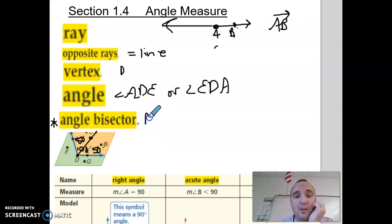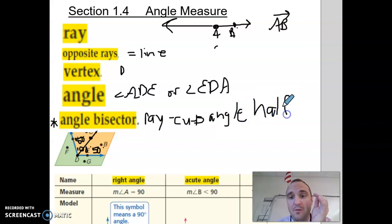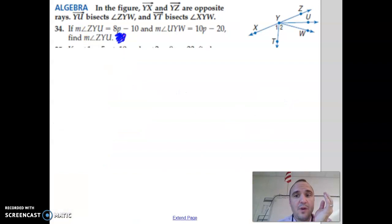So an angle bisector is usually a ray, and it cuts an angle in half, always. If I say something's an angle bisector in the given information of a problem, it always means it cuts it directly in half.